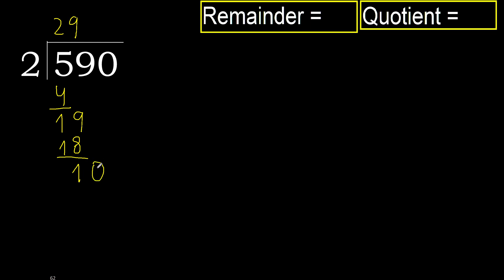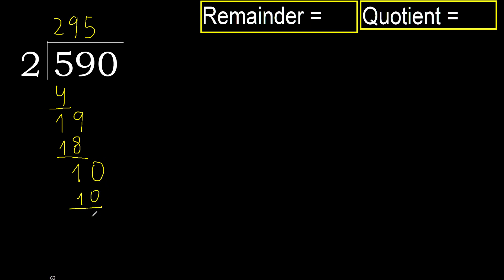Next: 10. 2 multiplied by 5 is 10. It is not greater, subtract 0.